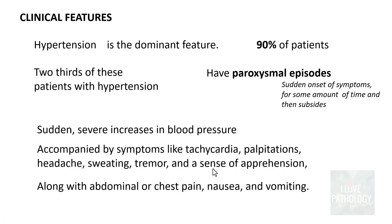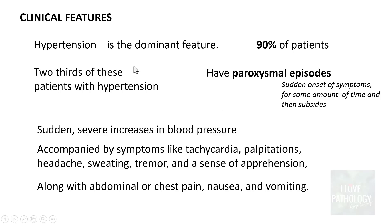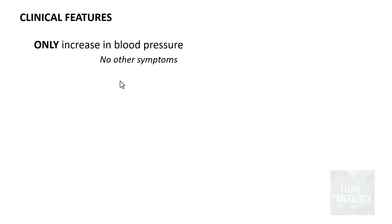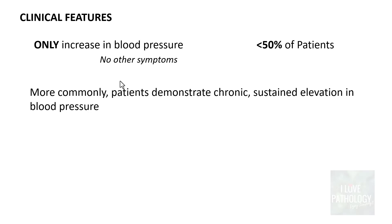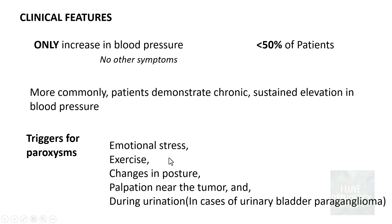Paroxysmal episodes are usually accompanied by abdominal or chest pain and may include nausea or vomiting. In some patients, only blood pressure elevation occurs without palpitations or tachycardia. Most often, pheochromocytoma patients show chronic sustained hypertension interspersed with paroxysms. Triggers for paroxysms include emotional stress, exercise, postural changes, palpation near the tumour, and urination — particularly with urinary bladder paragangliomas.